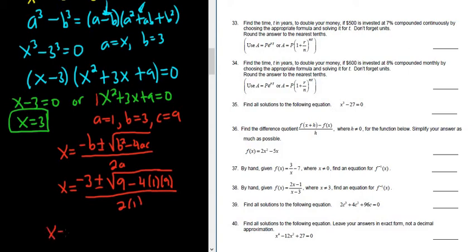So x is equal to negative 3 plus or minus. This is going to be 9 minus 36. So 9 minus 36 is negative 27. 9 minus 36 is negative 27 all over 2.